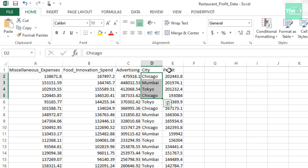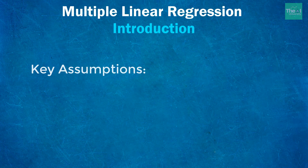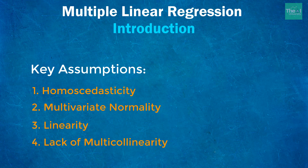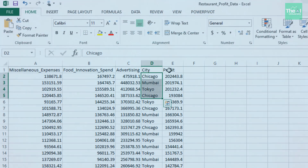Moving on to linear regression, we need to keep in mind that there are certain key assumptions we need to take whenever we are building these linear regression models. These assumptions are homoscedasticity, multivariate linearity, and lack of multicollinearity. I will create a separate video on these topics, but for now just keep in mind that these are the key assumptions when building linear regression models.